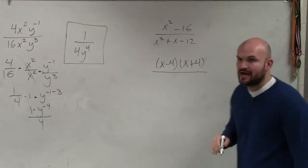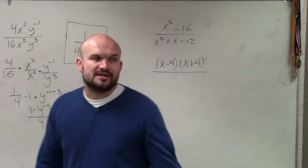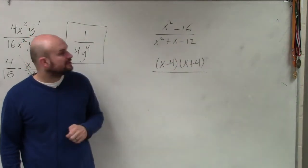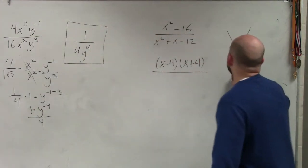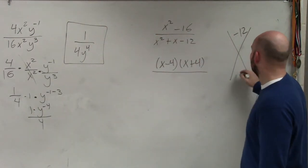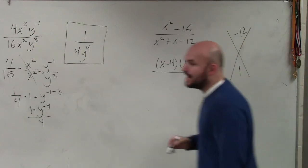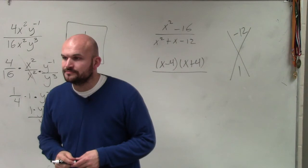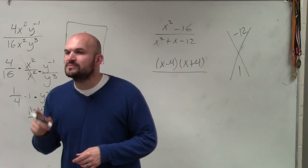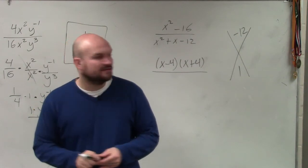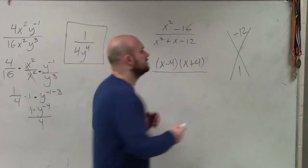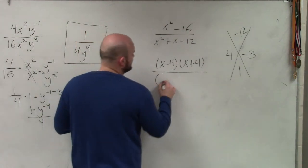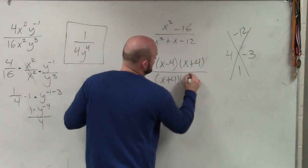Then, we look over here, and we have our trinomial. And what you guys notice with this trinomial is, again, we can factor the trinomial. So now, what we want to do is determine what two terms multiply to give us negative 12 and then add to give us positive 1. Positive 4, negative 3. So now, I rewrite that as x plus 4 times x minus 3.